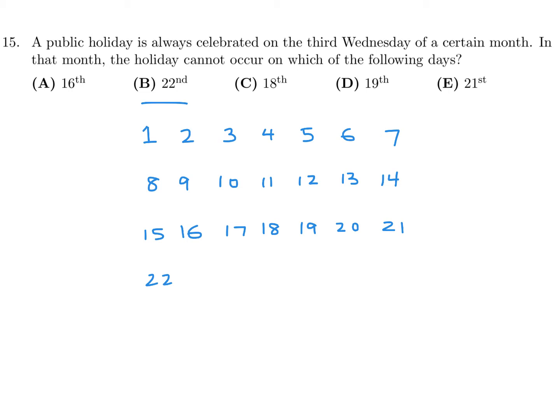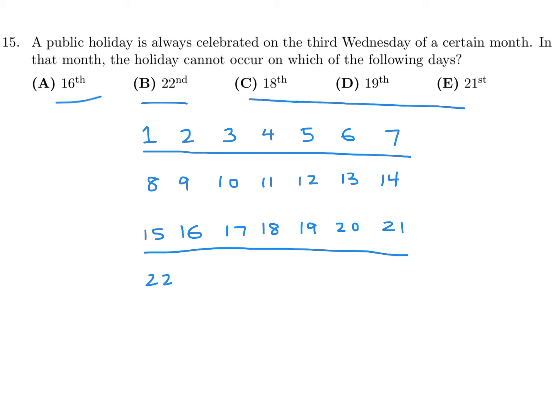What is not possible? If I put Wednesday in any of these positions, I could get the third Wednesday to be any of the dates 16 through 21. An extreme case: put Wednesday on the 7th. The next Wednesday would be the 14th and the next Wednesday would be the 21st. You could get the 21st, but you could never get the 22nd as the third Wednesday. So the answer is 15 is B.